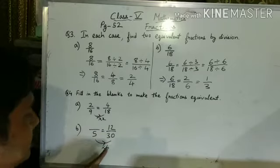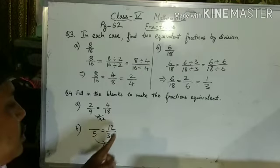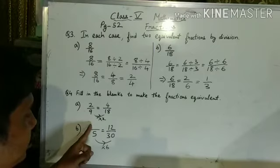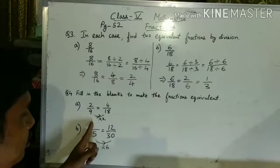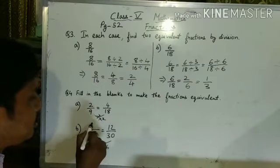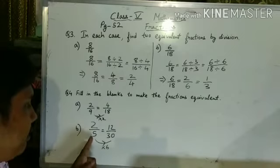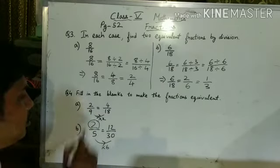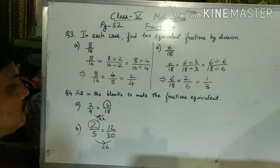Same way, this number into 6 should be 12. So, what will be this number? This should be 2. That's why 2, 6 are 12. So, this will be 2. Again, I am repeating. 5, 6 are 30. 2, 6 are 12. So, here answer is 2. And number 1 answer was 4.